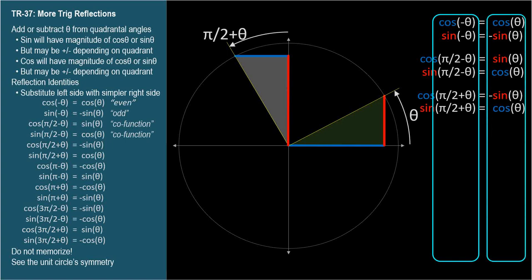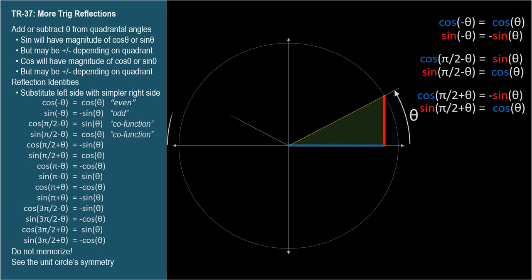Hopefully you aren't thinking about memorizing these new identities, since they're so easy to see on a unit circle. I'll go a little faster now. Let's move over to the negative x-axis, which represents a standard position angle of pi radians. Let's subtract theta to get the angle pi minus theta.